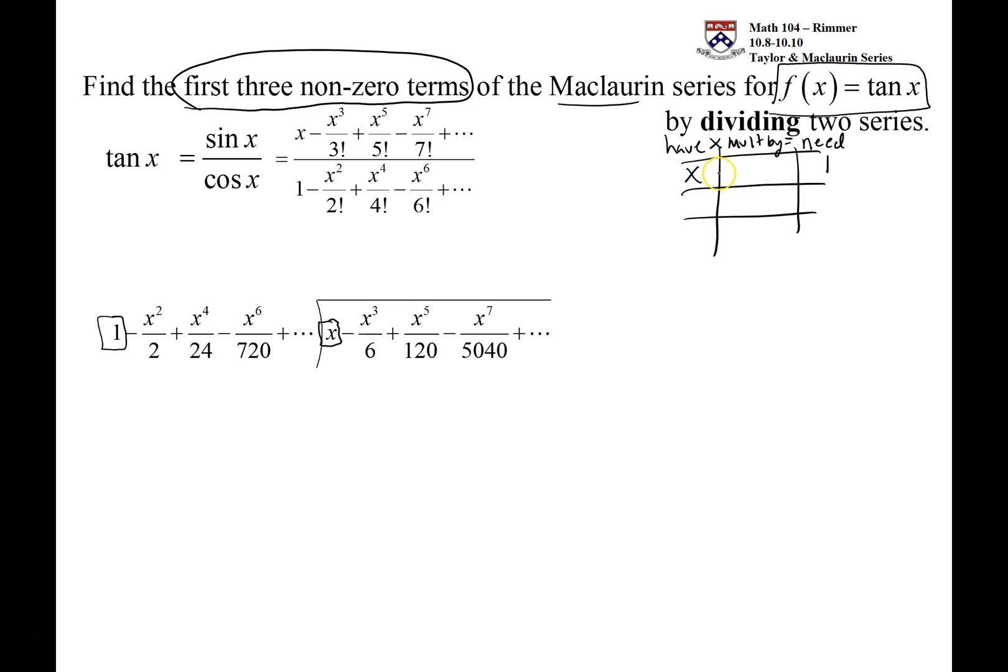And so, you look at the leading term who is the smallest guy, and you have an x, and you need a 1. What do you multiply that x by to turn in, I'm sorry, you have a 1, and you need an x. Oh gosh, sorry about that. You have a 1, and you need an x, and so you end up multiplying it by x to make it happen.